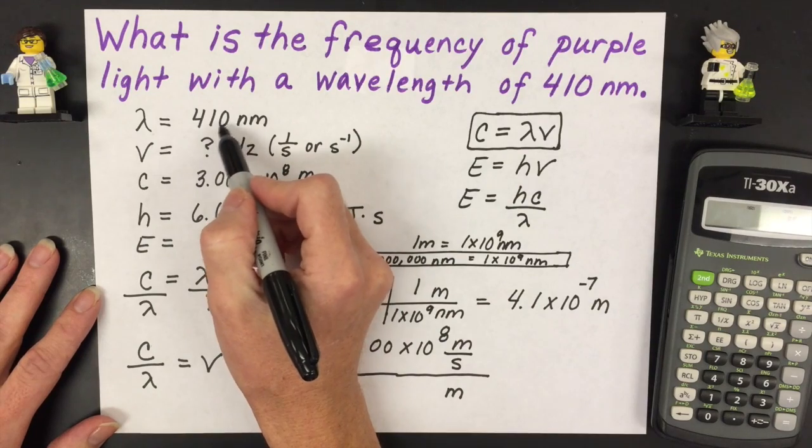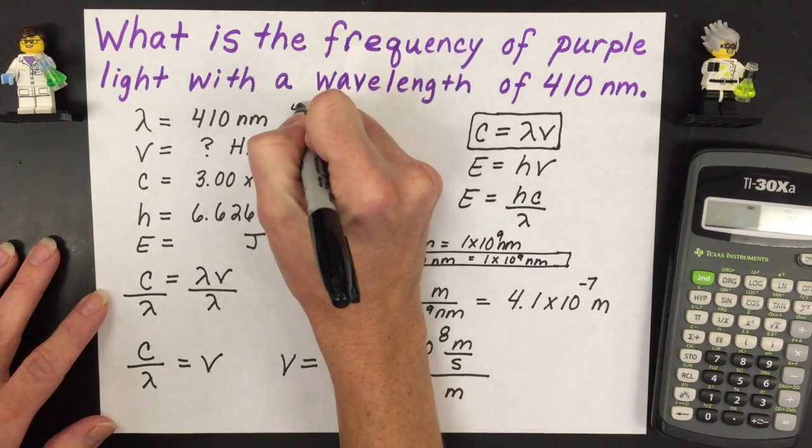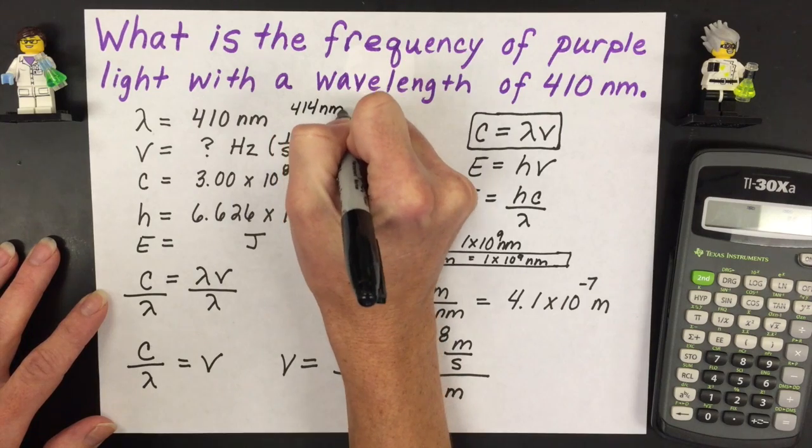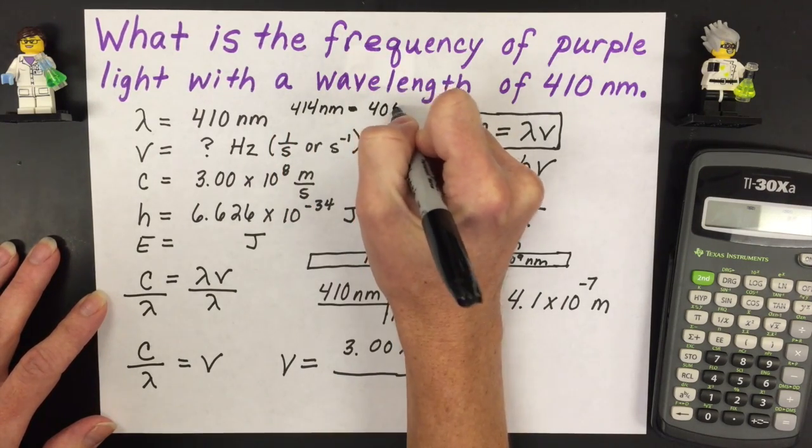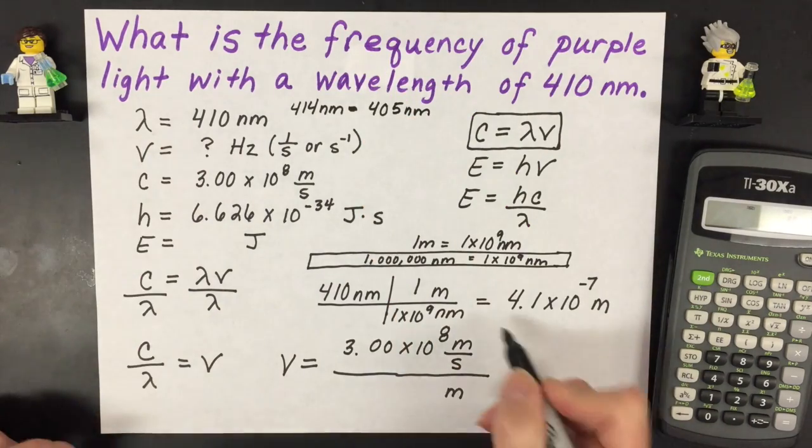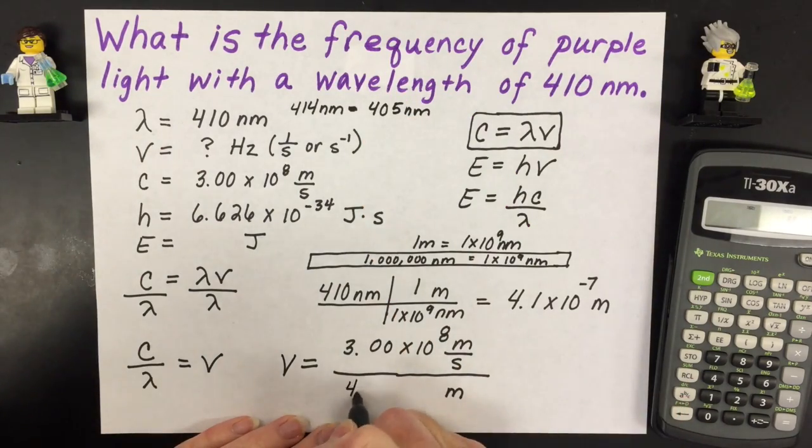That zero is a trailing zero and so really there's only two significant figures. Whoever measured this it's somewhere between 414 nanometers. This is the range and it could be as small as 405 nanometers. So we're saying there's only two significant figures so that's going to be fine to keep it that way. 4.1 times 10 to the minus seventh.